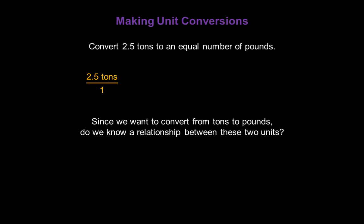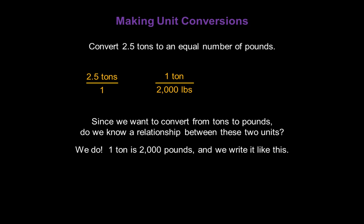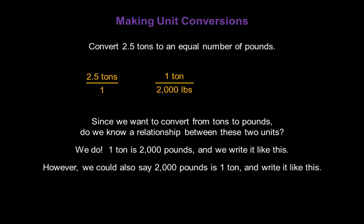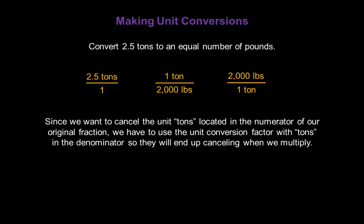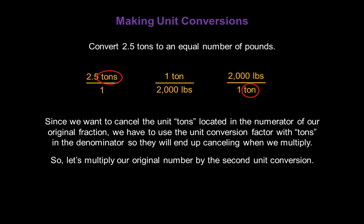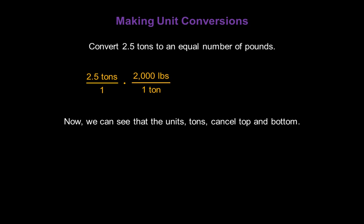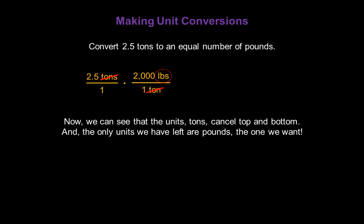Since we want to convert from tons to pounds, do we know a relationship between these two units? In fact, we do: one ton is 2,000 pounds. We could write it as one ton over 2,000 pounds, or as 2,000 pounds over 1 ton. Since we want to cancel the unit tons located in the numerator of our original fraction, we have to use the unit conversion factor with tons in the denominator, so they'll cancel when we multiply. Now we can see that the units tons cancel in the numerator and the denominator, and the only units we have left are pounds.